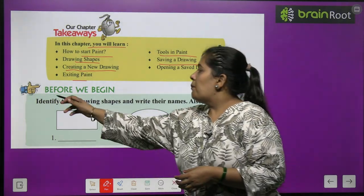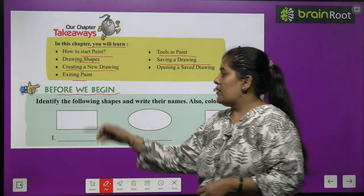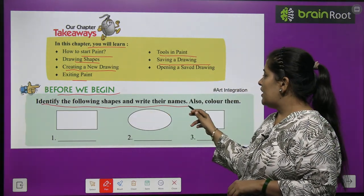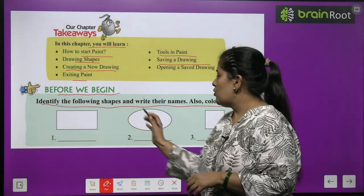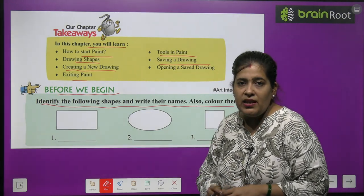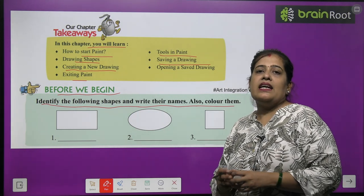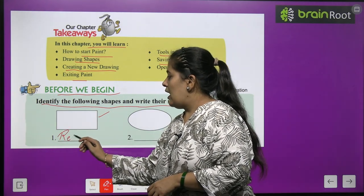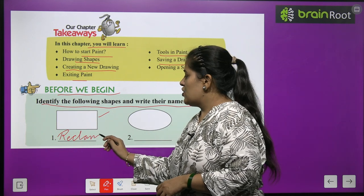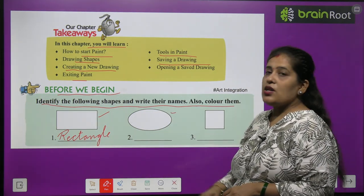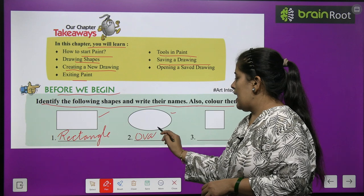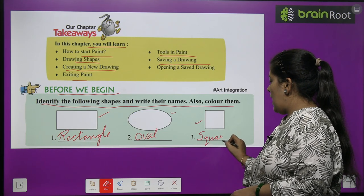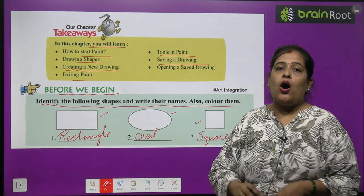Before we start, we have to do an activity. Identify the following shapes and write their names, and also color them. The first shape is a rectangle. The next shape is oval — O-V-A-L. The next one is square — S-Q-U-A-R-E. Now you have to color all these shapes.